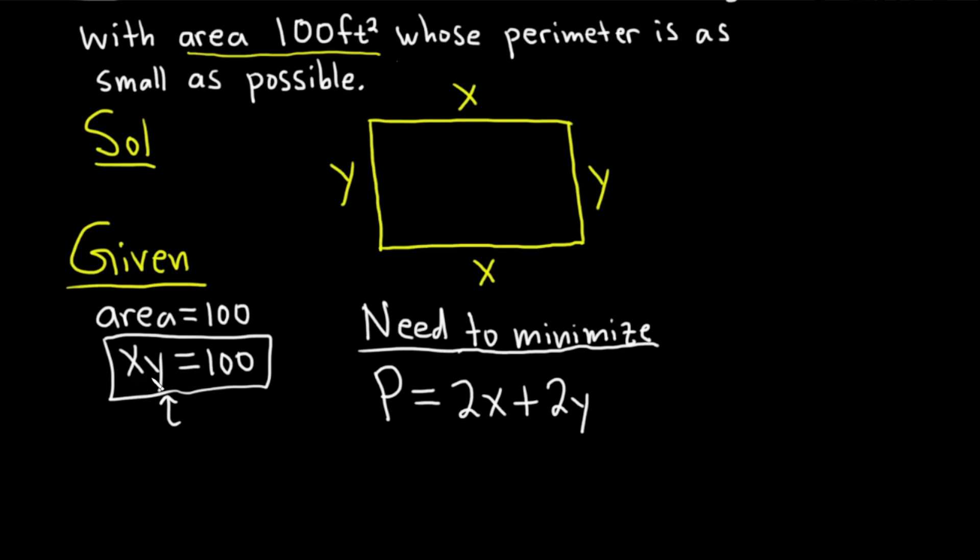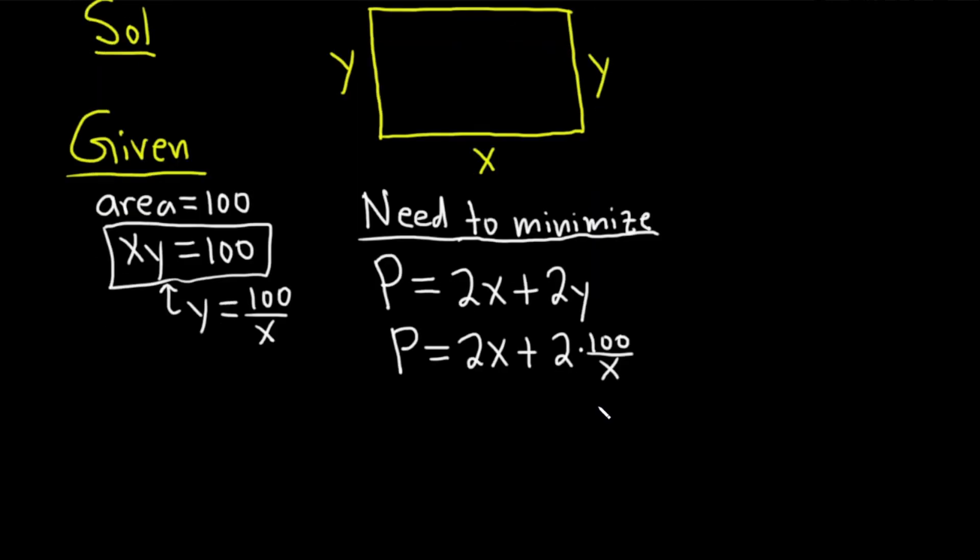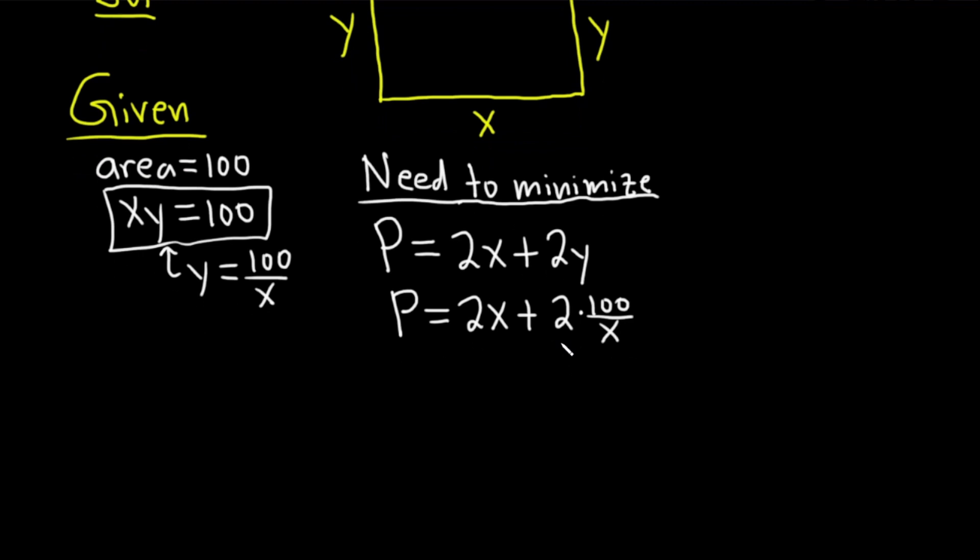So if we take x times y equals 100 and divide both sides by x, we get y equals 100 over x. Now let's plug this into P. So P equals 2x plus 2 times 100 over x, just replacing the y with 100 over x. Now we have a pure function of x. We can attempt to minimize it.